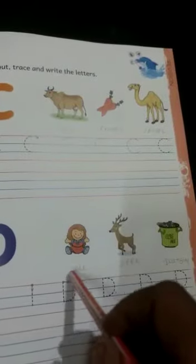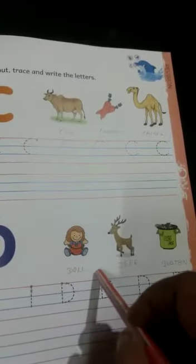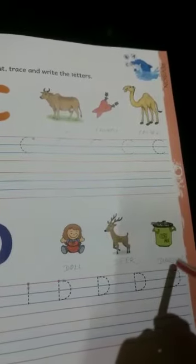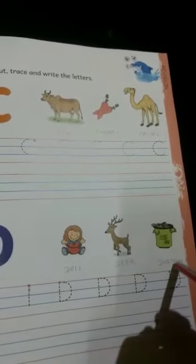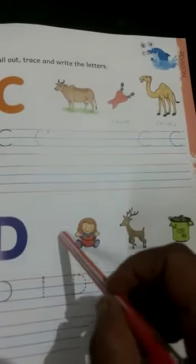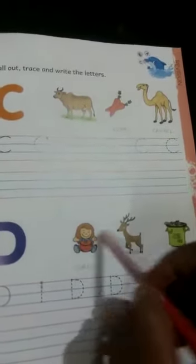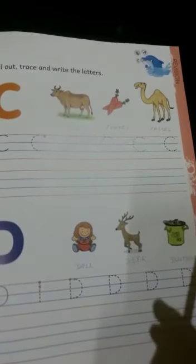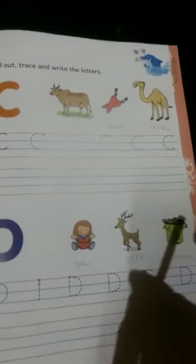Doll spelling is D-O-L-L, doll. Deer spelling is D-E-E-R, deer. Dustbin spelling is D-U-S-T-B-I-N, dustbin. Doll manne kandhi, deer manne harina, dustbin manne tamiya jouti olia pakeeva jagga.